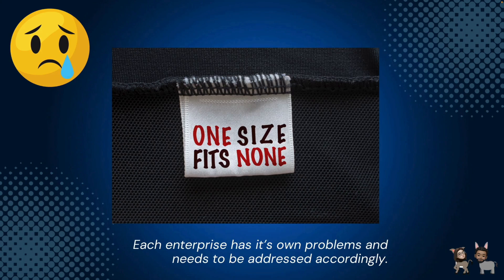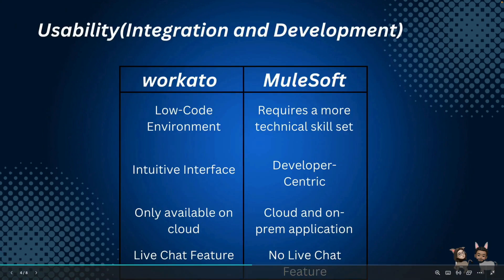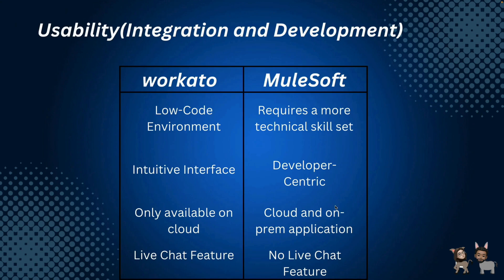Before we start, we need to realize that one size fits none, and each enterprise has its own problems that need to be addressed accordingly. It might be the case that some enterprises, based on their use case, will benefit more from using Workato than MuleSoft, or vice versa. We need to understand that based on the business problems each enterprise has, we need to decide which iPaaS will be best suited for that particular enterprise.